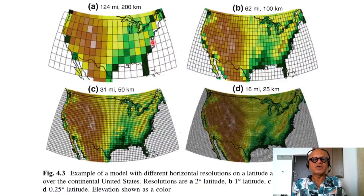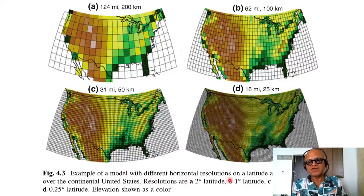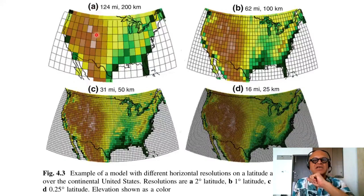Here is how resolution affects your representation. This is a 124 mile or 200 kilometer rectangular grid. Example of a model with different horizontal resolutions on a latitude and longitude grid over the continental United States. Resolutions are 2 degree latitude, 1 degree latitude, half a degree latitude, and quarter degree latitude. Elevation is shown as a color, so you have the Rocky Mountains here. When you use a 2 degree grid resolution, you have the Rocky Mountain features basically getting wiped out, which gets better with 1 degree, somewhat better with half a degree, and much better with quarter degree.